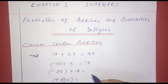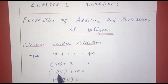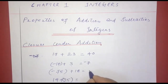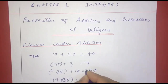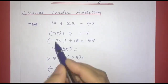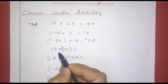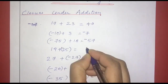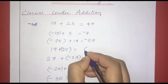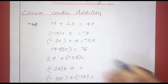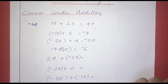We have two numbers: negative 75 plus 80. If we have opposite signs, one negative and one positive, we subtract: 80 minus 75 is 5. The sign is positive, so the answer is positive 5. Next: 19 plus negative 25. One is negative and one is positive. We subtract: 25 minus 19 is 6. The sign is negative, so negative 6. We have an integer.